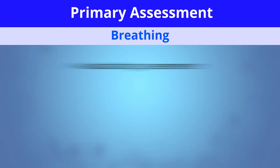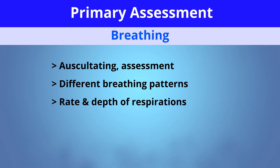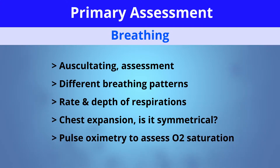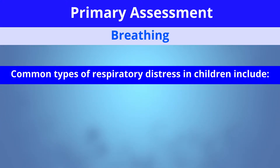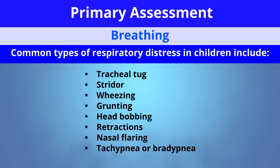For breathing, you want to auscultate and assess, looking at their breathing patterns. You want to assess their rate and depth of respirations and their chest expansion — is it symmetrical or asymmetrical? You then want to assess their pulse oximetry to assess their oxygen saturations. Common types of respiratory distress in children or work of breathing could be tracheal tugging, stridor, wheezing, grunting, head bobbing, in-drawing, nasal flaring, tachypnea, and bradypnea.